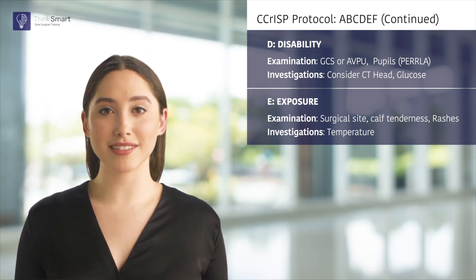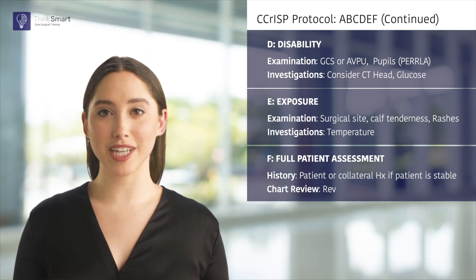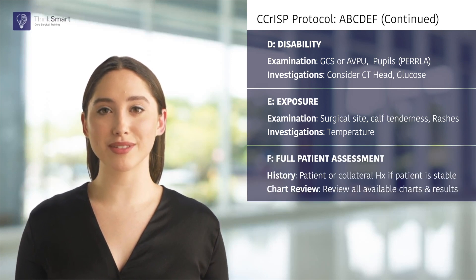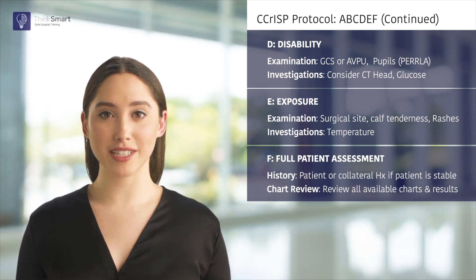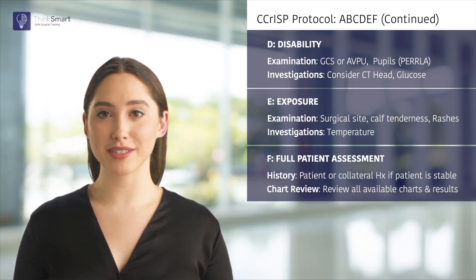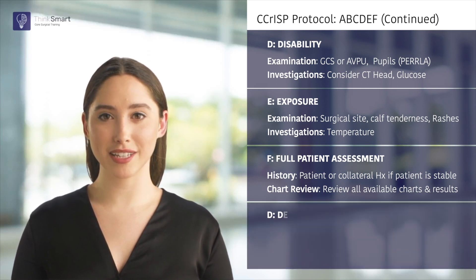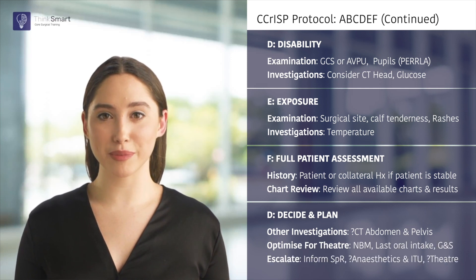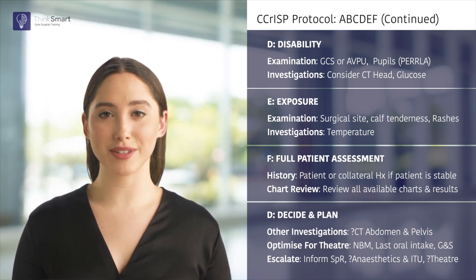If the patient remained stable I would take a focused history or a collateral history from any family members or nursing staff. I would review the patient's anaesthetic and drug chart for opioid use, the operative notes for potential complications as well as the NEWS chart for trends. Most of my bedside investigations would already have been requested during the CRISP protocol but I would consider a CT abdomen pelvis if indicated.